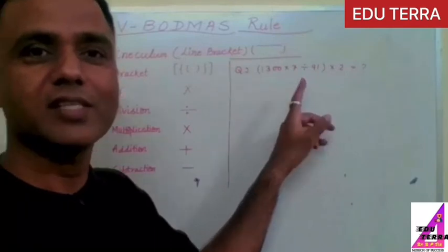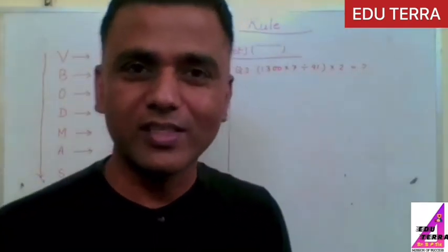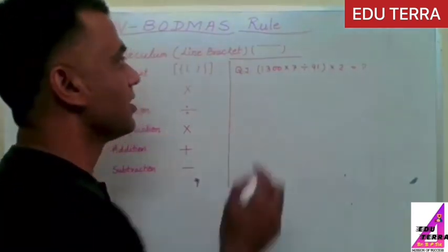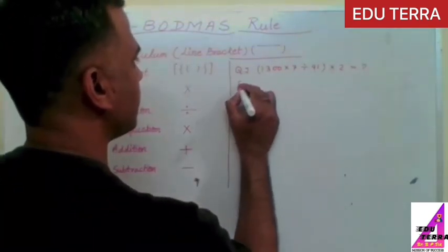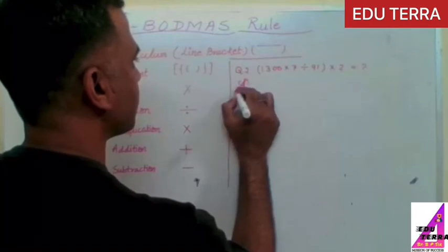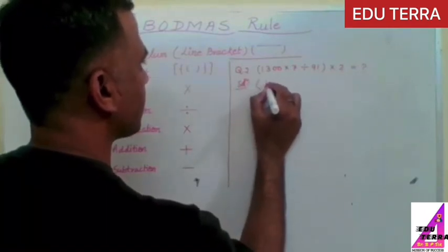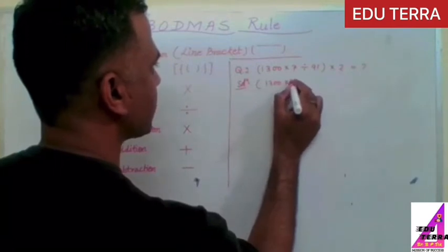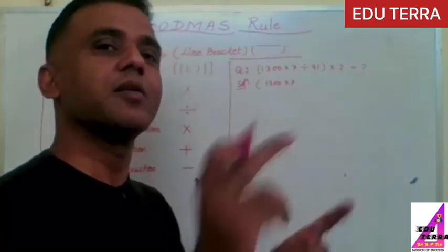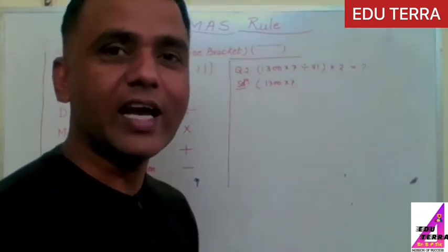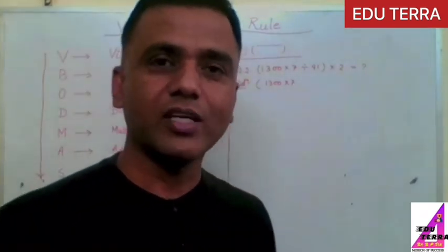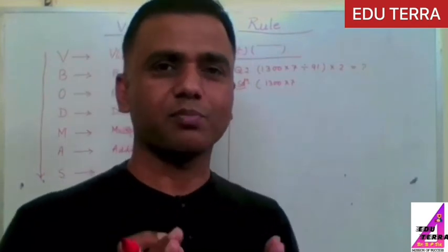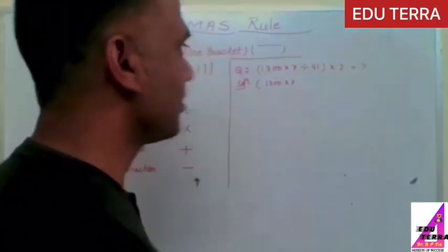So as per the VBODMAS rule, we have to remove first vinaculum bracket which is not in the question. So after that we have to solve the bracket, but see, in the bracket you have given this multiplication also and this division also. So first what we have to do? First we will try to remove this division. The meaning of this, it can be solution: 1300 × 7, change the division sign in multiplication and 91 will be converted in its reciprocal. This one is best way to solve this type of question.